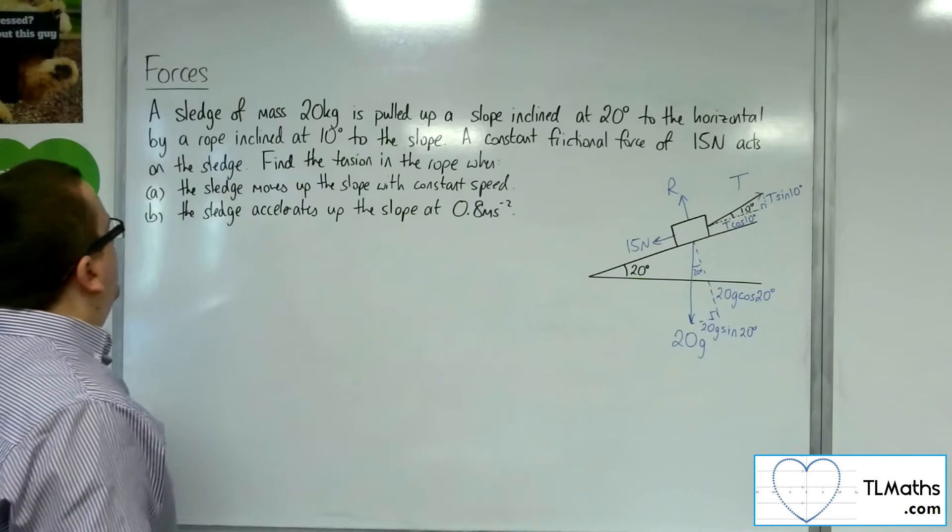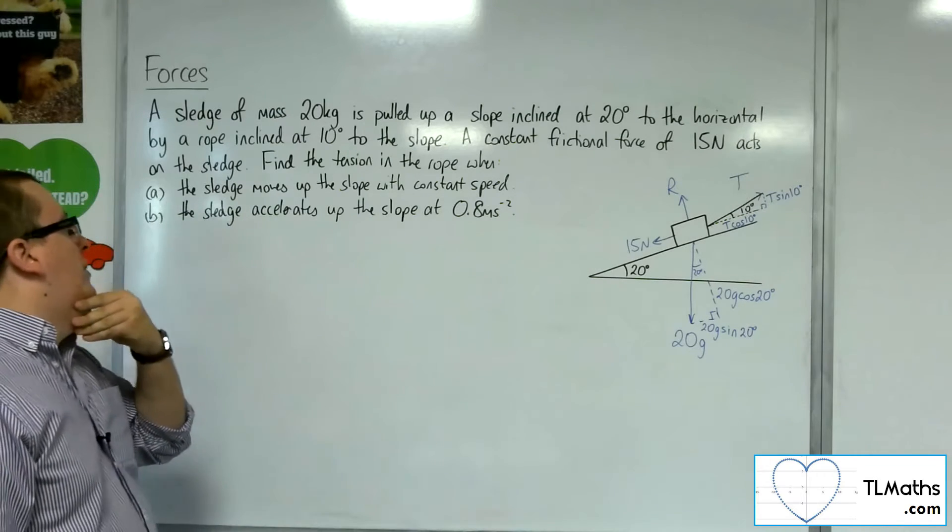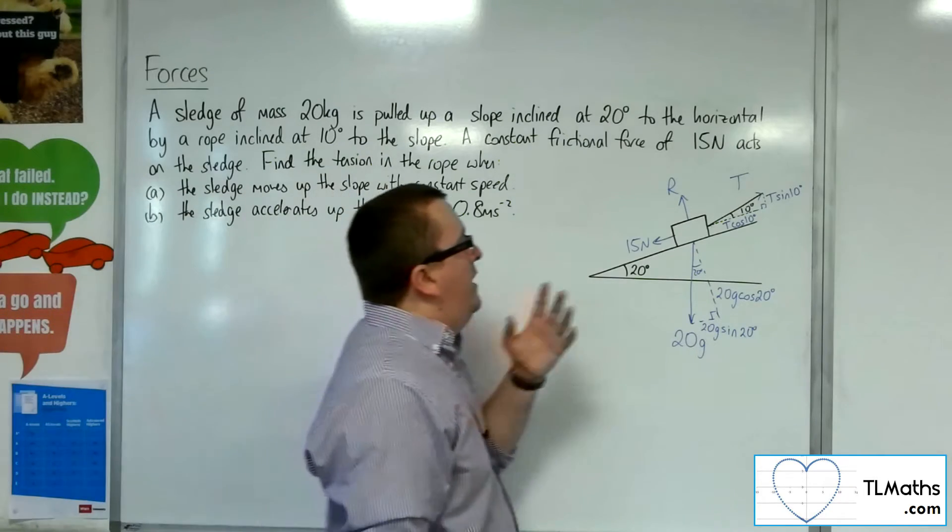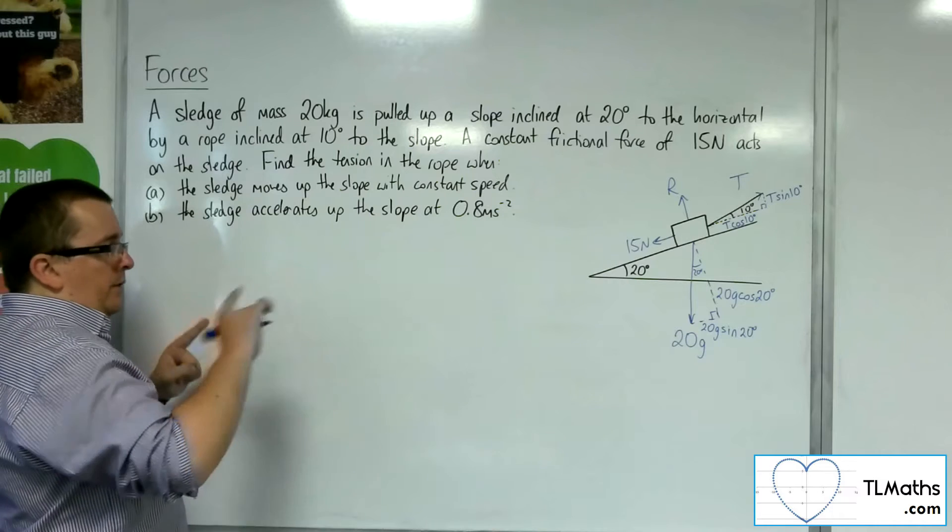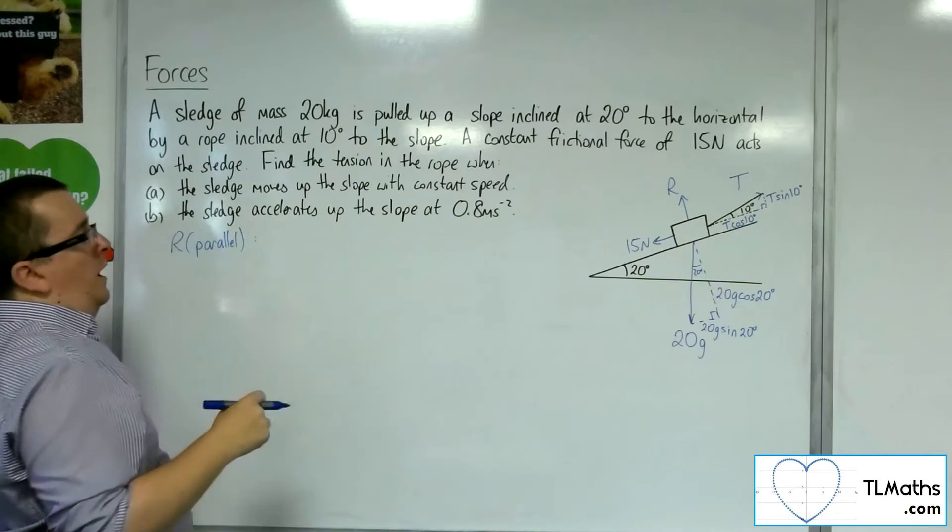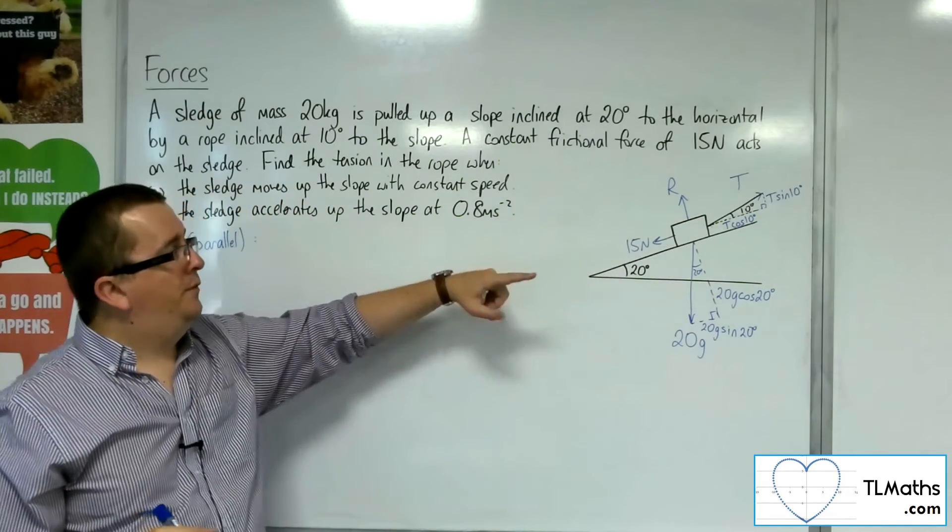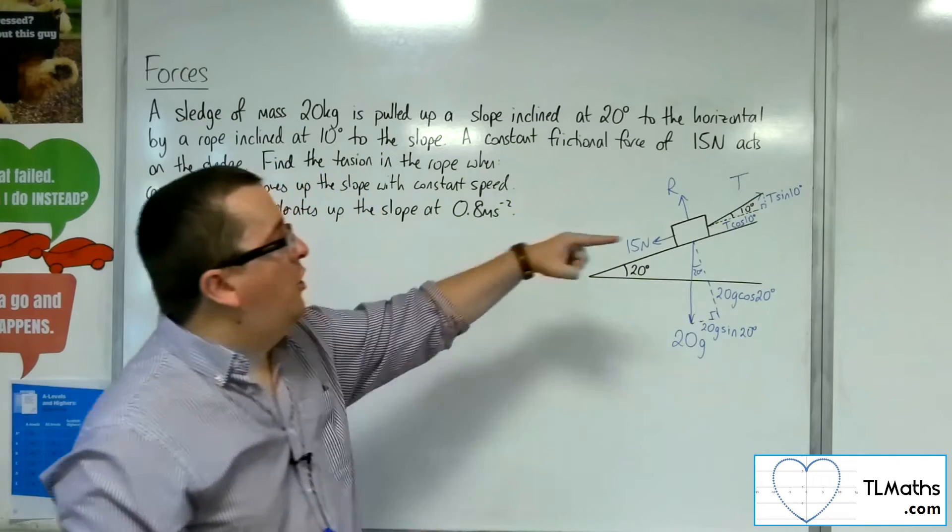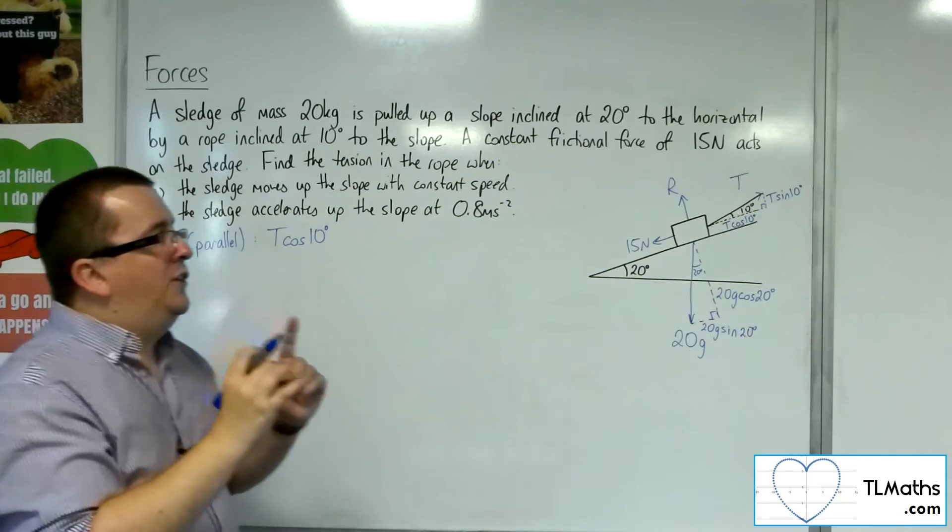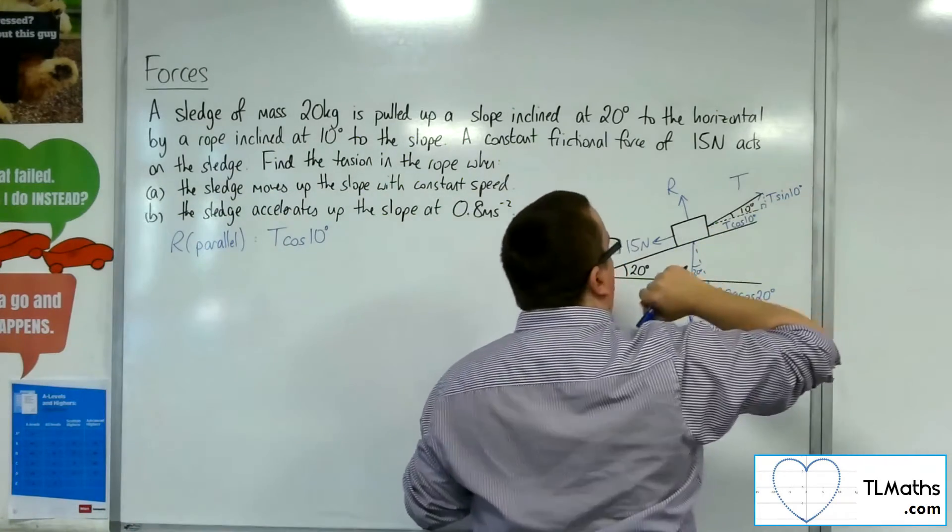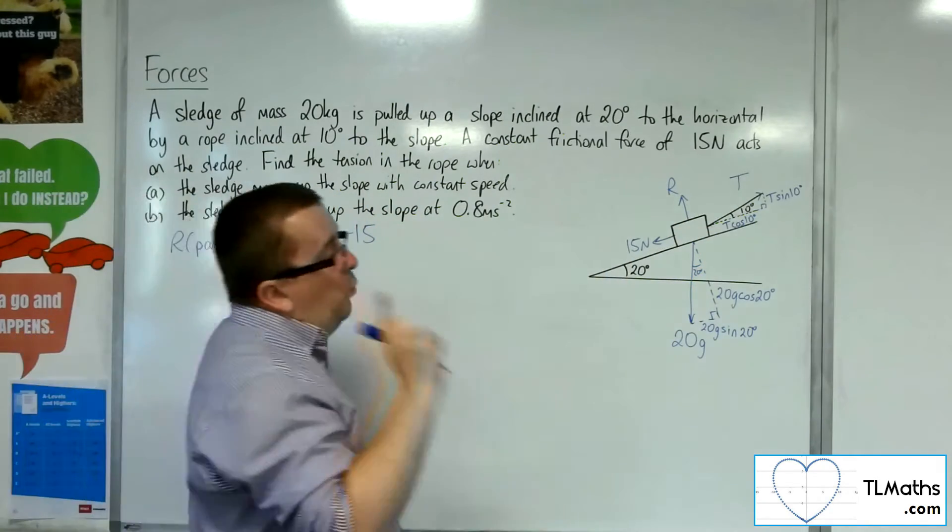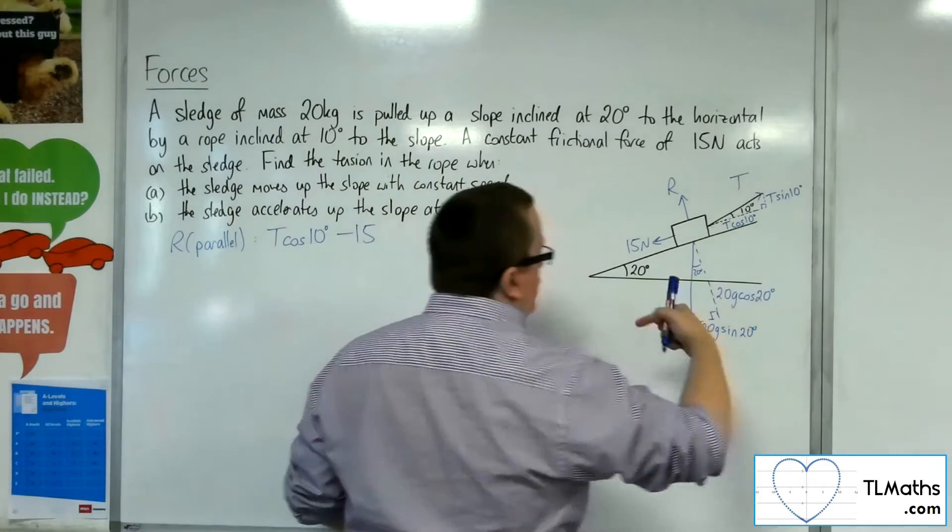So let's first look at the slope moves up the slope with constant speed. So we are going to resolve this parallel to the plane. I'm going to take the direction of motion as positive. So I've got this T cos 10. That's the component of the tension working up the slope. I've got the 15 newtons working against us. But that's not all. I've also got the weight working against us, the 20g sine 20.